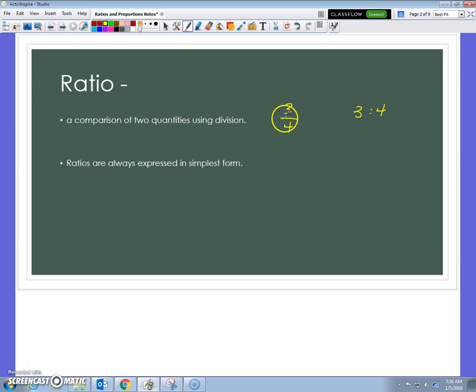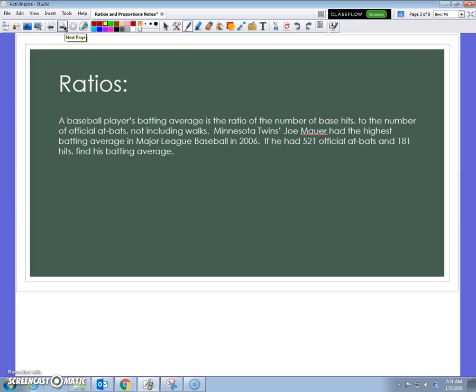It can be written like a fraction bar or with a colon. So, 3 fourths is the same ratio as 3 to 4. It's a comparison. The division sign, fraction bar, or colon all mean division. You always put your ratios in simplest form though. So, if I had 10 to 12, it would be the same as saying 5 to 6. They reduce just like fractions.